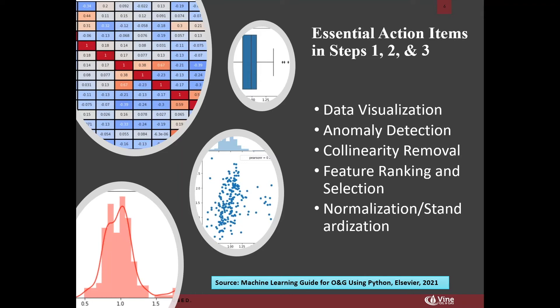Prior to applying machine learning, one important step — especially if you're using algorithms such as artificial neural network or support vector machine — is to normalize your dataset. Normalization means taking each input feature and subtracting the minimum, then dividing by the max minus the min. Tree-based algorithms such as random forest and extra trees do not require normalization or standardization. For unsupervised algorithms like k-means clustering, standardization is recommended instead — subtracting the mean and dividing by the standard deviation.